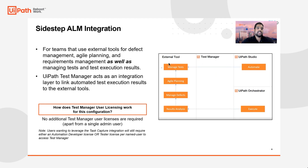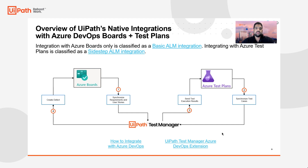The second type of integration is a sidestep ALM integration. In this scenario, all defect management, agile planning, requirements management, and test case management would occur within ADO, the external tool. UiPath Test Manager would merely act as an integration layer, allowing users to link automated test cases to those external tools. In this configuration, UiPath Test Manager doesn't require any additional user licenses, apart from that single admin user that would help set up the integration. Overall, we support both integrations with ADO.